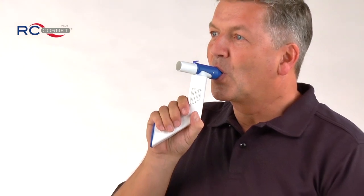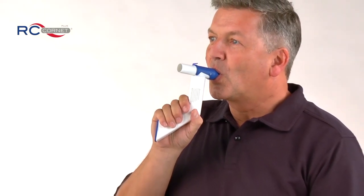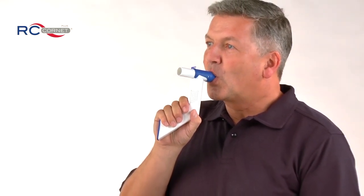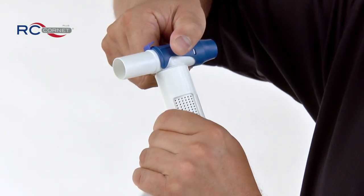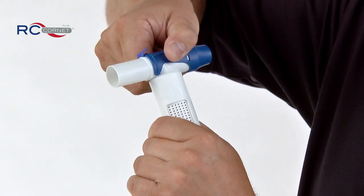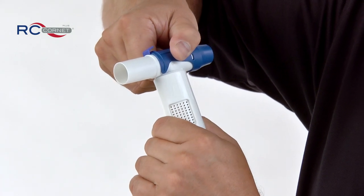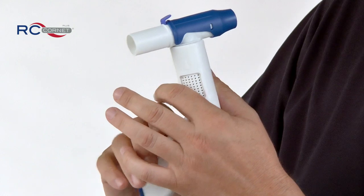Once secretions have been removed from the airways, the cough reflex diminishes automatically. By turning the body of the device, patients can set the level of their own exhalation pressure. The initial setting is recommended for patients with severely limited lung function.